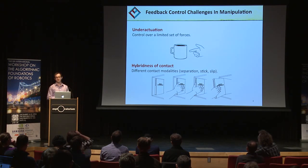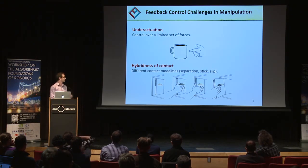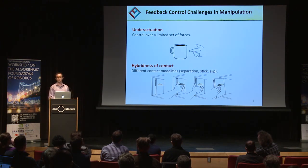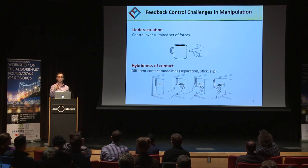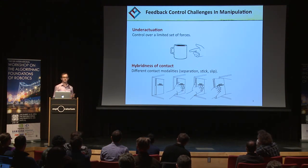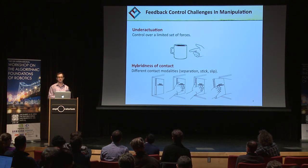The second great challenge is the hybridness of contact — contact has different modes. For example, take grasping a book from a shelf: your hand is initially separated from the book, but to retrieve it, it needs to make contact, then stick, then slide to secure a grasp. These transitions between separation, sticking, and sliding result in non-smooth dynamics that complicate feedback controller design.